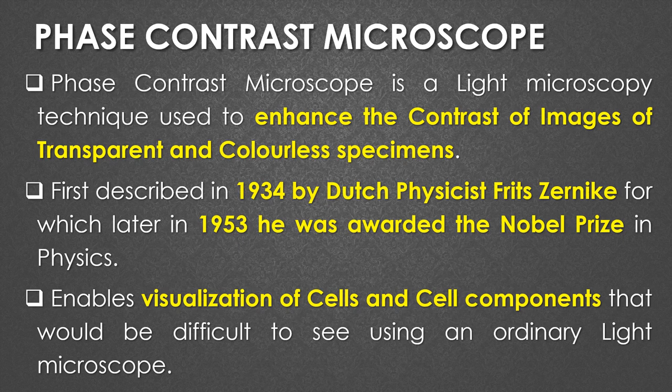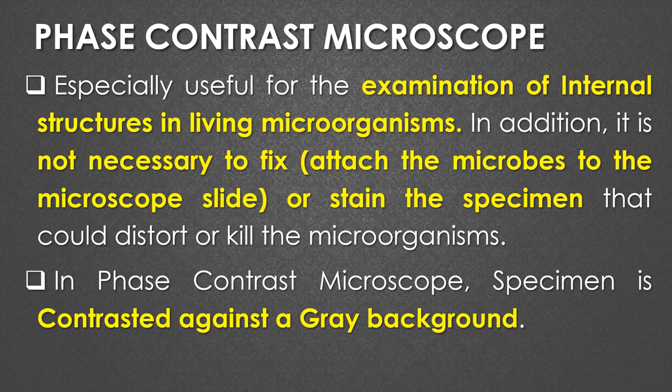The phase contrast microscope enables the visualization of cells, cell components, and cell organelles that would be difficult to see using an ordinary light microscope. It is especially used for the examination of internal structure in living microorganisms. In addition, for phase contrast microscopy it is not necessary to fix the microorganisms on glass slides or stain the specimens — heat fixation and staining is not necessary.